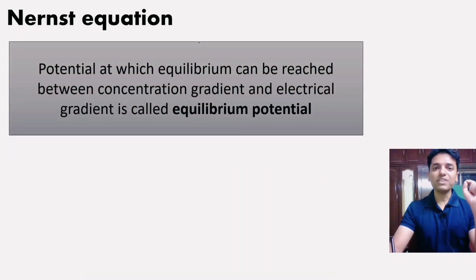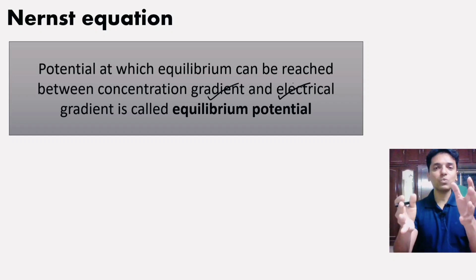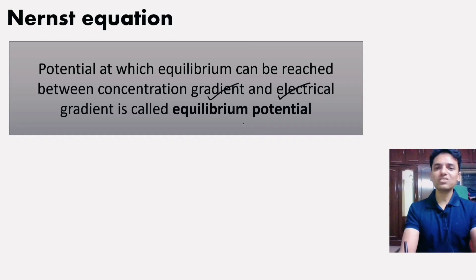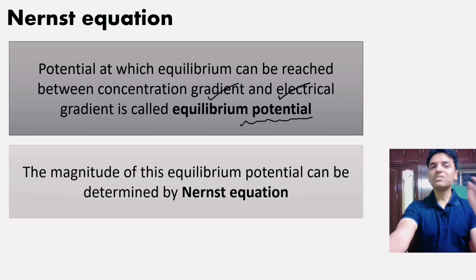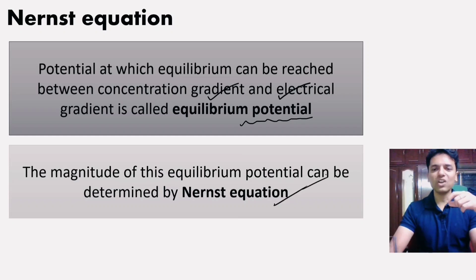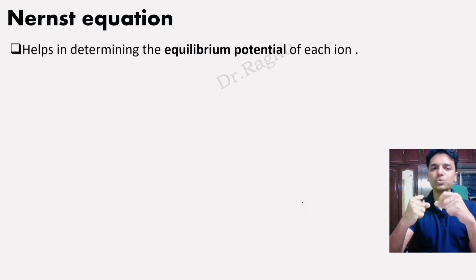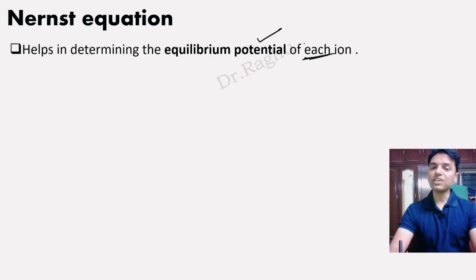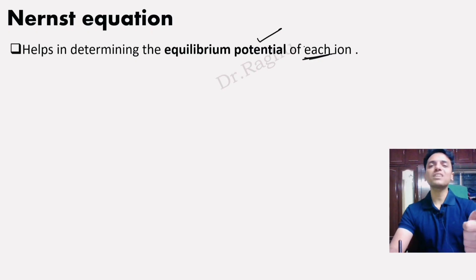The Nernst equation gives us the potential at which the equilibrium between the concentration gradient and the electrical gradient is reached — called the equilibrium potential. At this equilibrium potential, there is no net movement of ions. The Nernst equation helps us determine the equilibrium potential of each individual ion: it is the membrane potential at which the influx and efflux of that ion are equal.